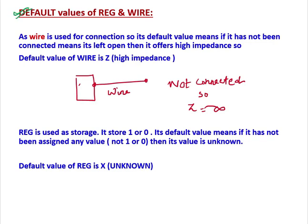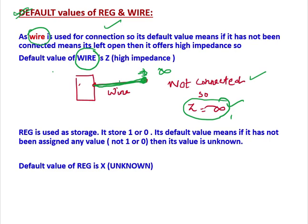Wire is used for a connection — it is an electrical path used for a connection. If the wire is not connected, it will offer infinite resistance or impedance. So the default value of Wire is high impedance because an unconnected wire is like an open circuit. For Reg, since it is used for storage and can store either 1 or 0, if it has not been assigned any value, we don't know what value is stored. Therefore, the default value of Reg is unknown. This is the concept behind the default values of Reg and Wire.